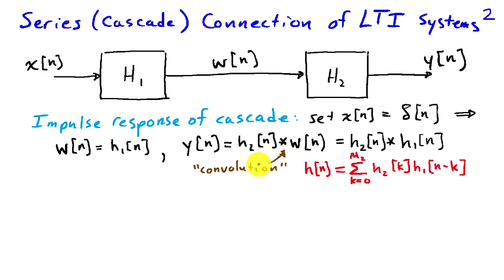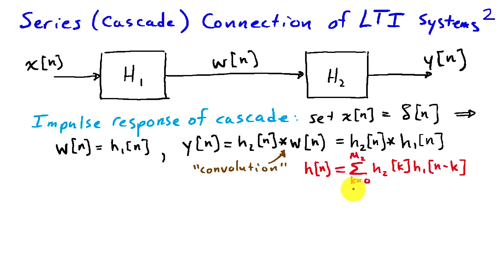We're using the star to denote convolution in compact form. Since w of n is just the impulse response of the first system h1 of n, I can write y of n as h2 convolved with h1 of n. Because the input x of n is an impulse, this output reflects the impulse response of the overall system. So the impulse response h of n is the convolution of the impulse responses of the two systems in cascade, written as a sum from k equals 0 to m2 of h2 of k times h1 of n minus k.